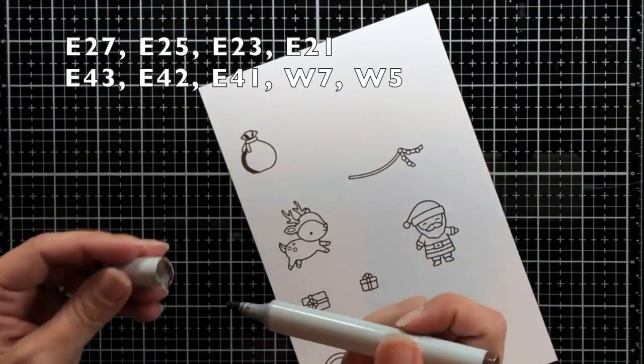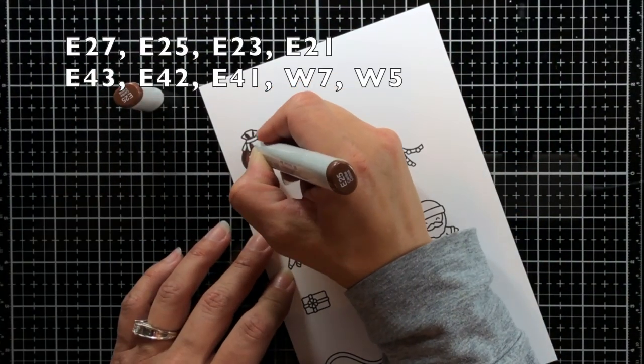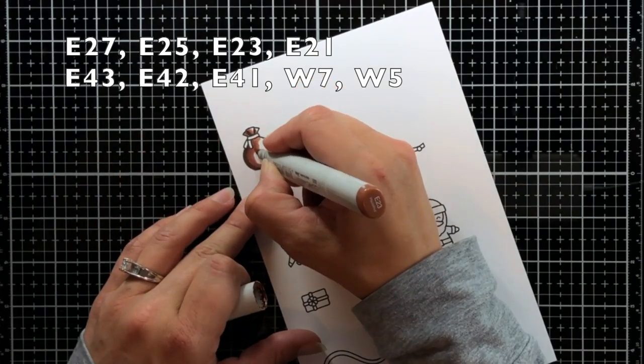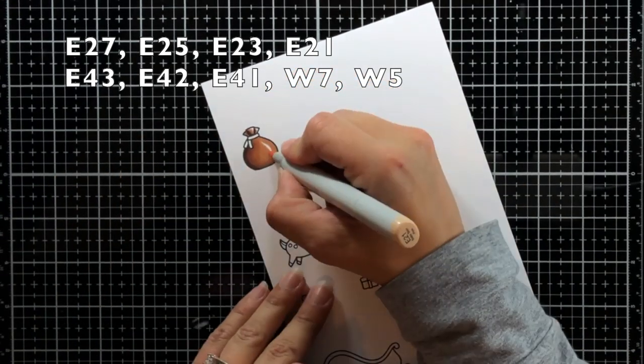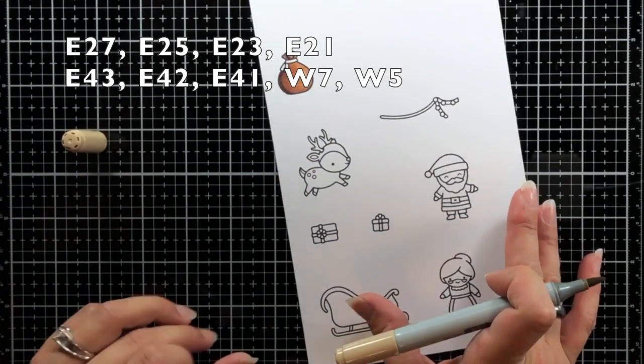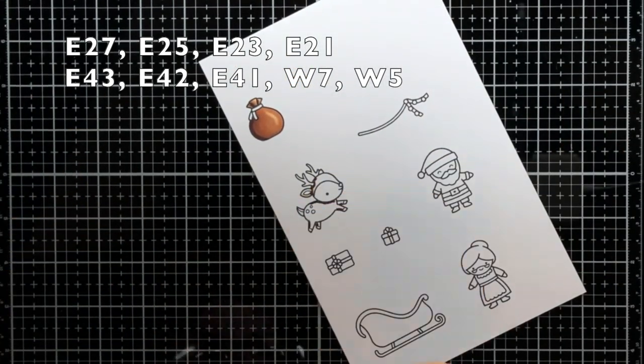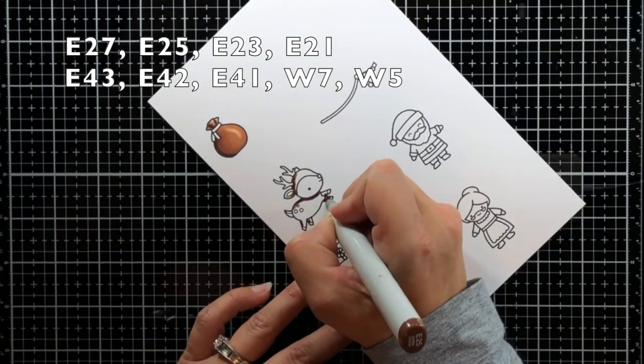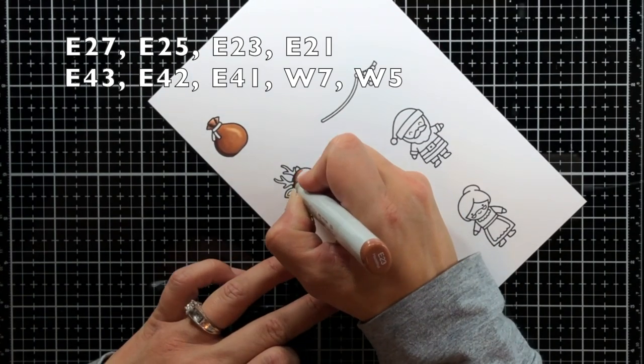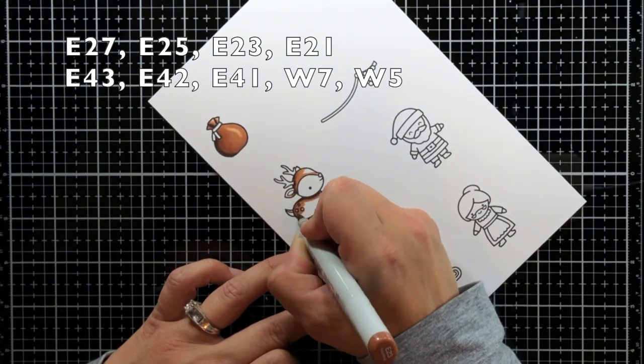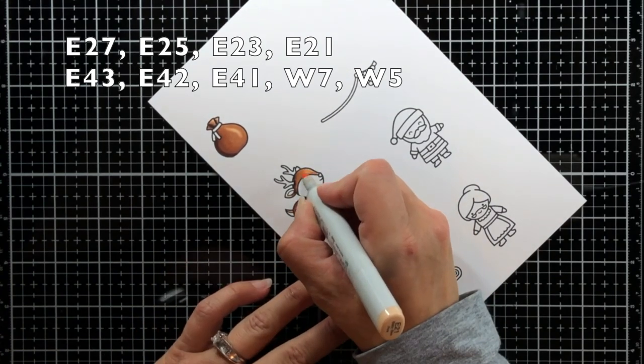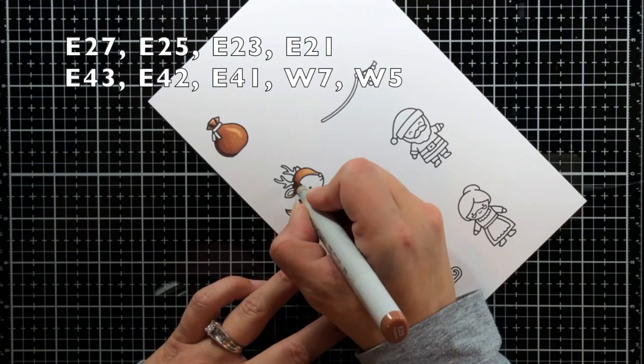I'm going to start out my card by doing some Copic coloring. I'm using the images from the Ho Ho Ho Holidays stamp set. I stamped the images in jet black ink onto Lawn Fawn's white cardstock which is great for Copic coloring. I will have all of my colors listed on the screen as well so if you'd like to use the same colors they will be available there for you.